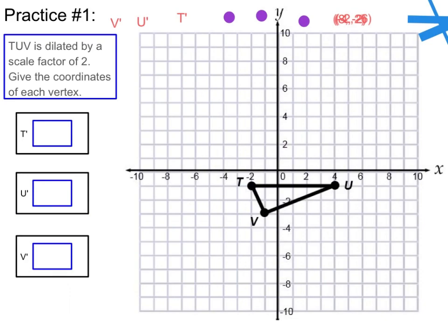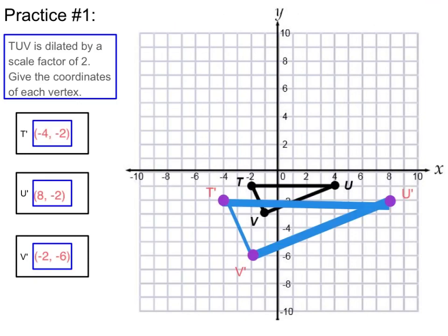Let's take a look at practice number one. TUV is dilated by a scale factor of 2. Give the coordinates of each vertex. This is a practice problem — I want you to try it on your own. Go ahead and pause the video, record each of the vertices and draw it on your coordinate plane, then press play again to see if you're right. Make sure that your answers match mine and that your shape looks to be in the same place on the coordinate plane before moving on.